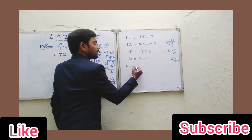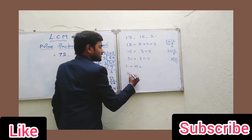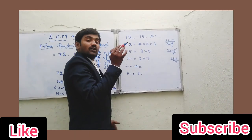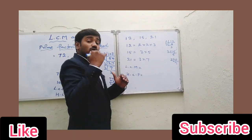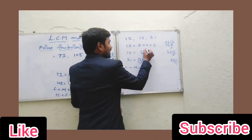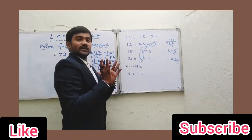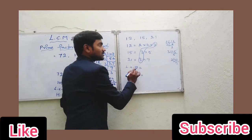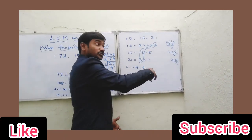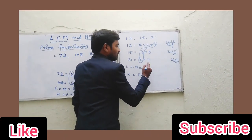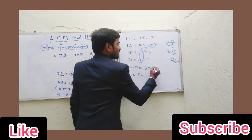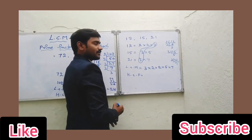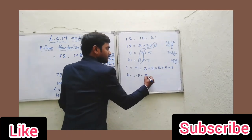Now let us find the LCM and HCF. LCM is the product of common factors into non-common factors. The common factor here is only 3. The non-common factors are 2, 2, 5, and 7. So LCM equals 3 × 2 × 2 × 5 × 7. And HCF directly equals 3.